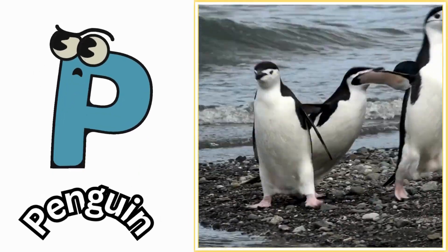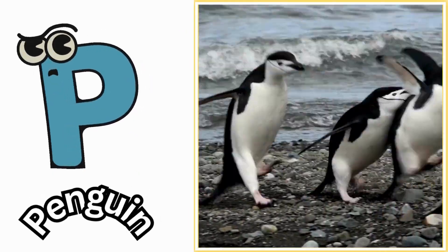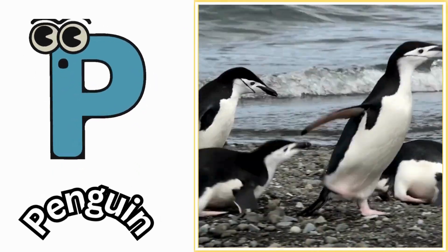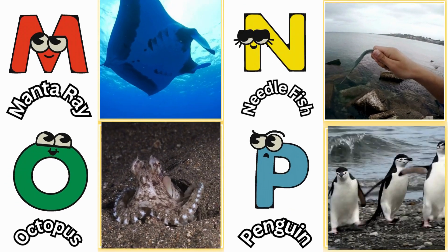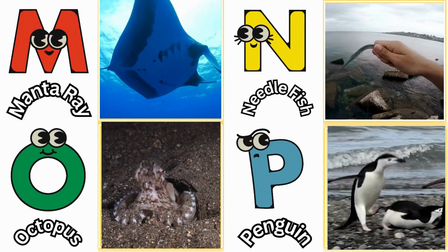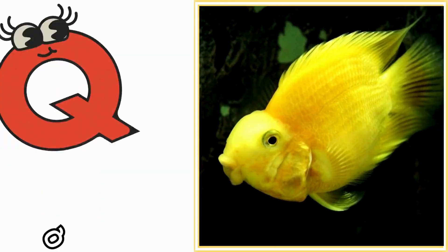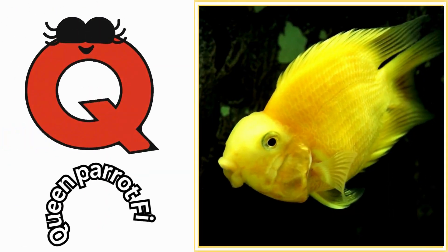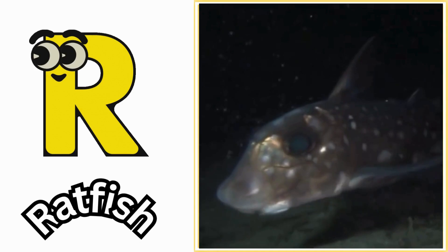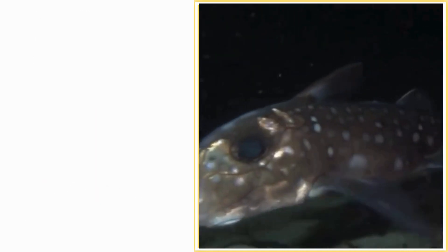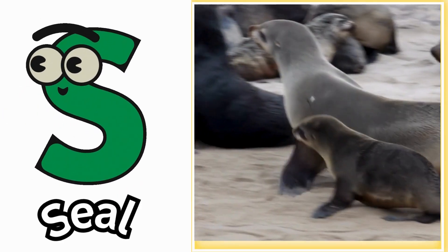P is for penguin. Puh, penguin. Q is for queen parrotfish. Quh, queen parrotfish. R is for ratfish. Rr, ratfish.